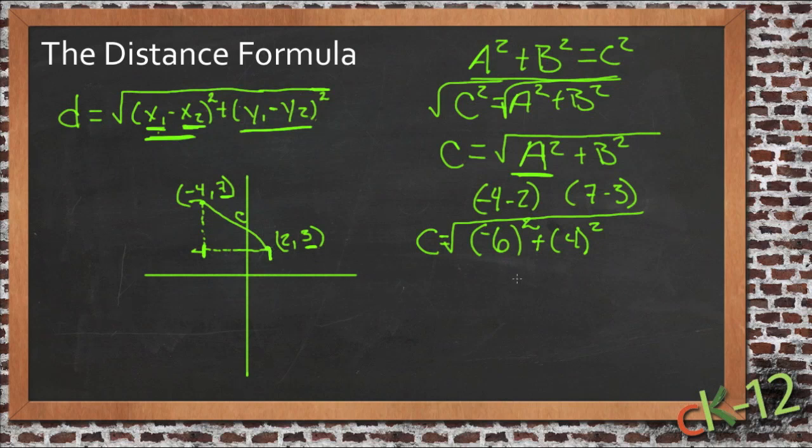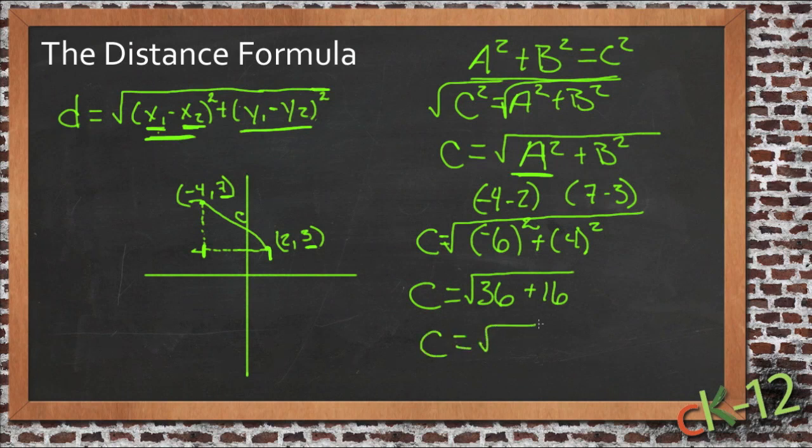So for our little triangle right here, we have negative 6 squared, that's 36. And 4 squared, that's 16. That's 52. So c equals the square root of 52, which isn't an even number, but since the square root of 49 is 7, it's a little bit more than 7. So we're just going to say c is about 7.2.